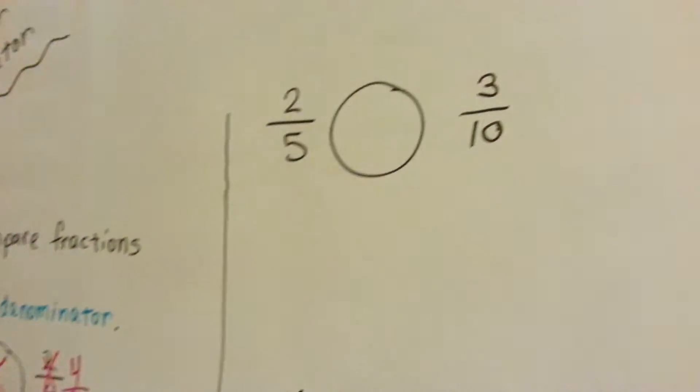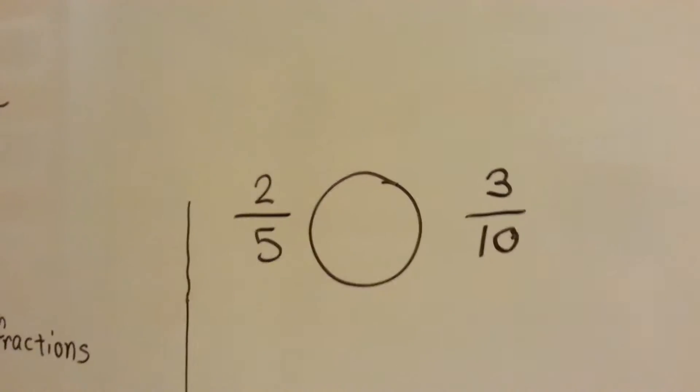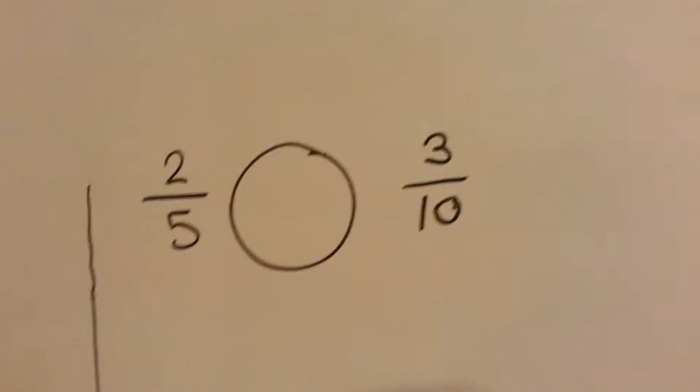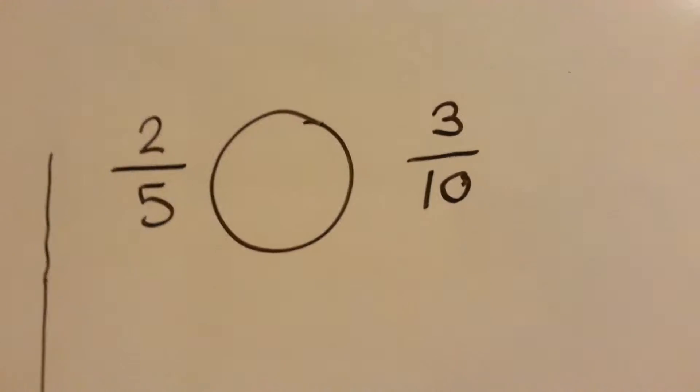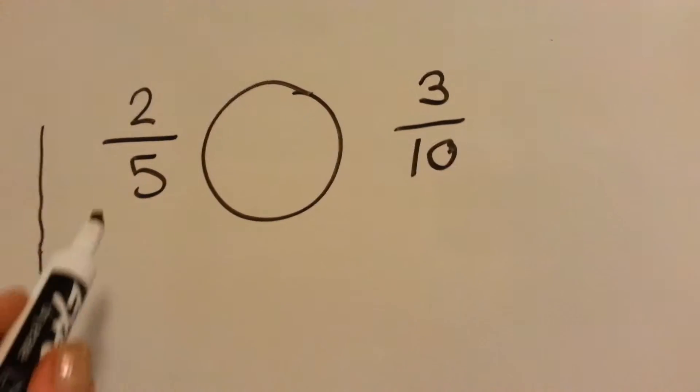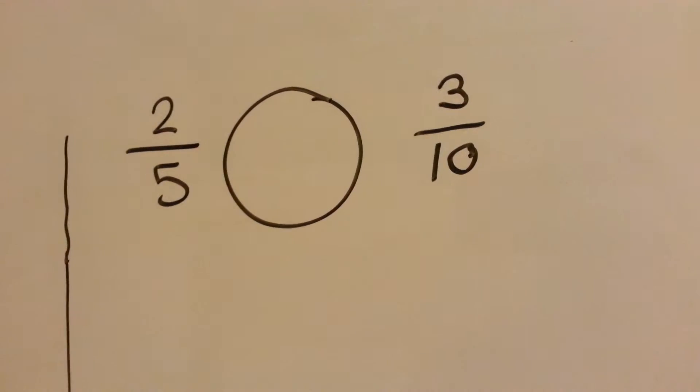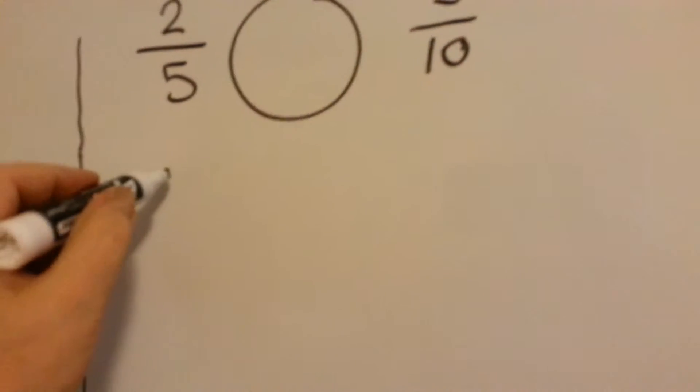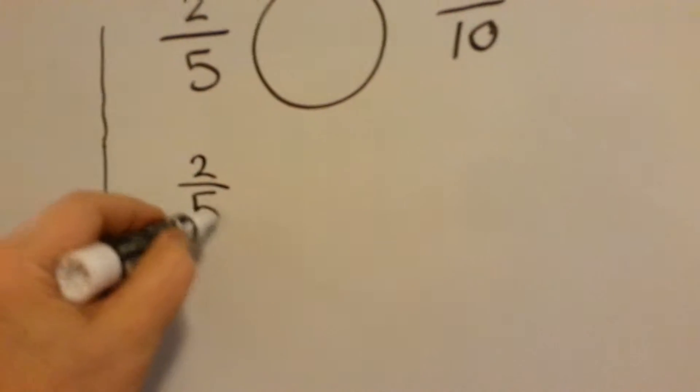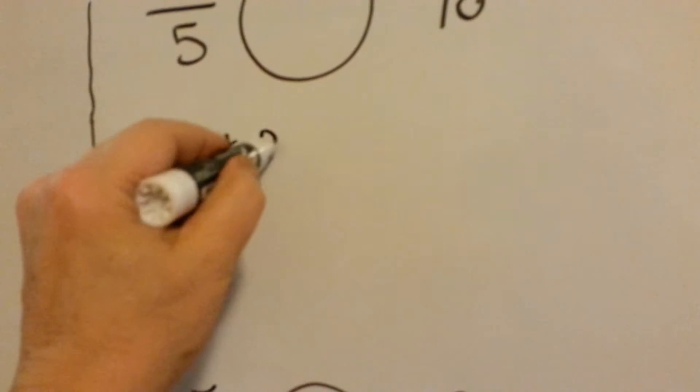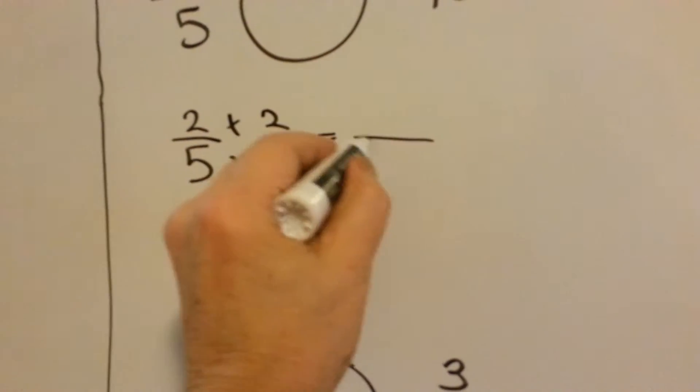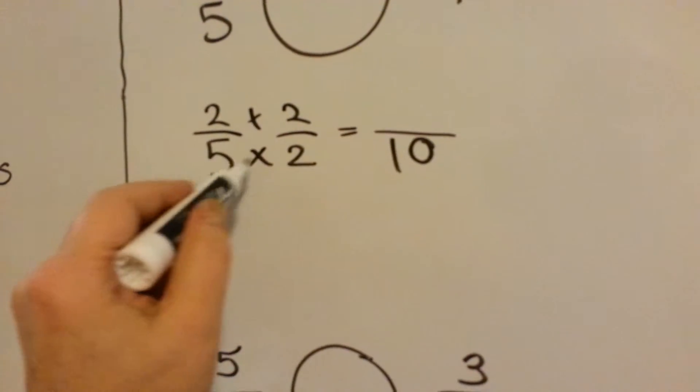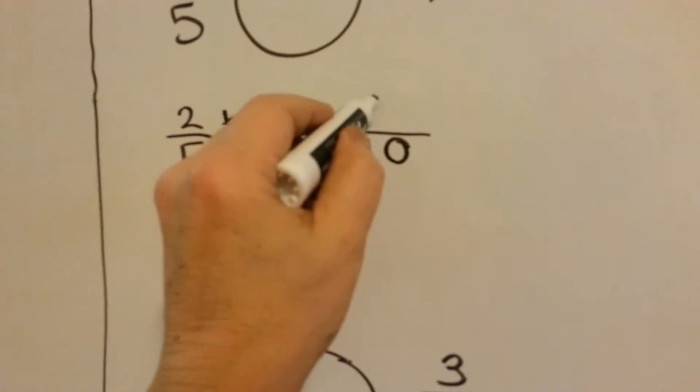What happens when we've got 2 fifths and 3 tenths? We need to get the 5ths and the 10ths at the same house. We know that if we multiply 5 times 2, it can become a 10. So what we do is we multiply it by the 2. The numerator gets jealous and wants to be multiplied by 2. 5 times 2 is 10. 2 times 2 is 4.